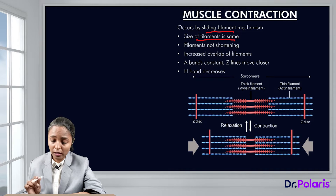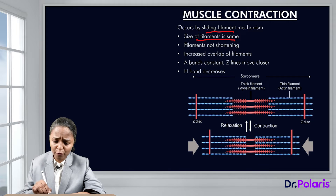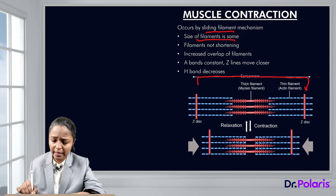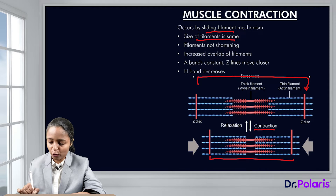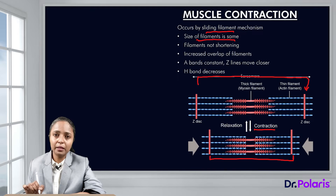Actually, the sarcomere shortens. From one Z-line to another Z-line is the sarcomere, and when the muscle contracts we see that the size of the sarcomere has decreased. So what has happened is that the filaments have slid over each other.